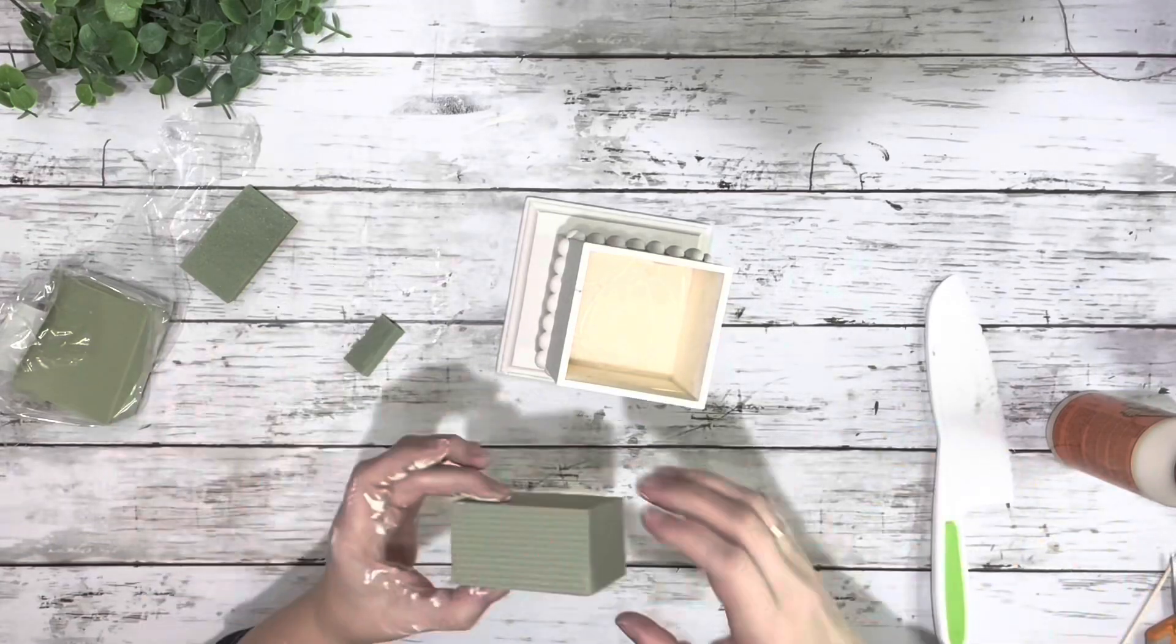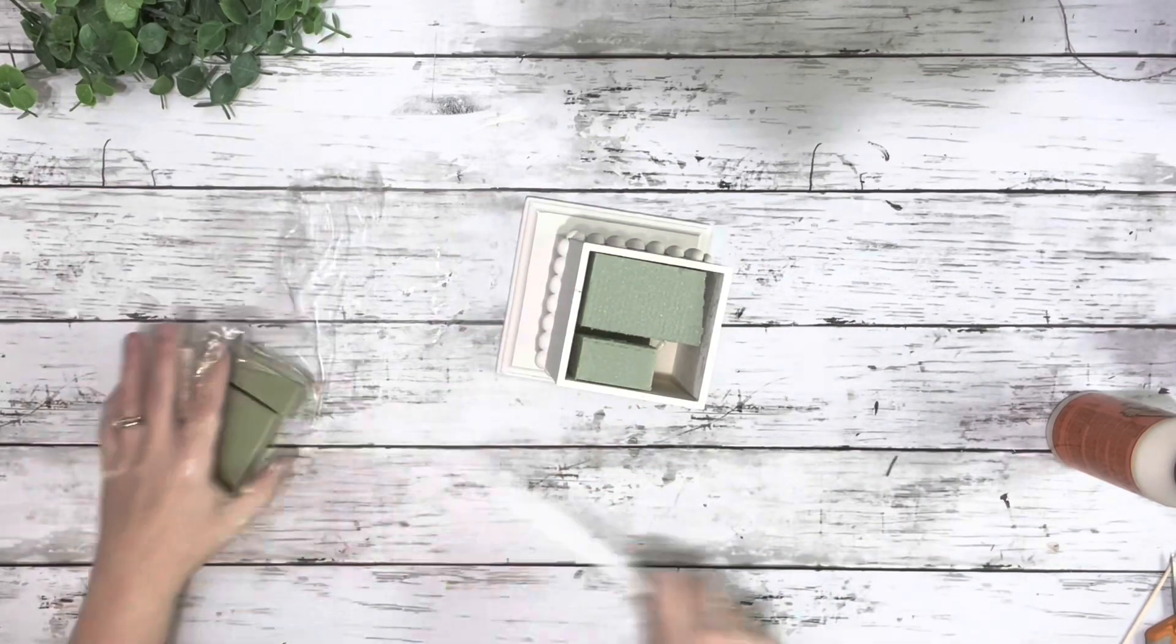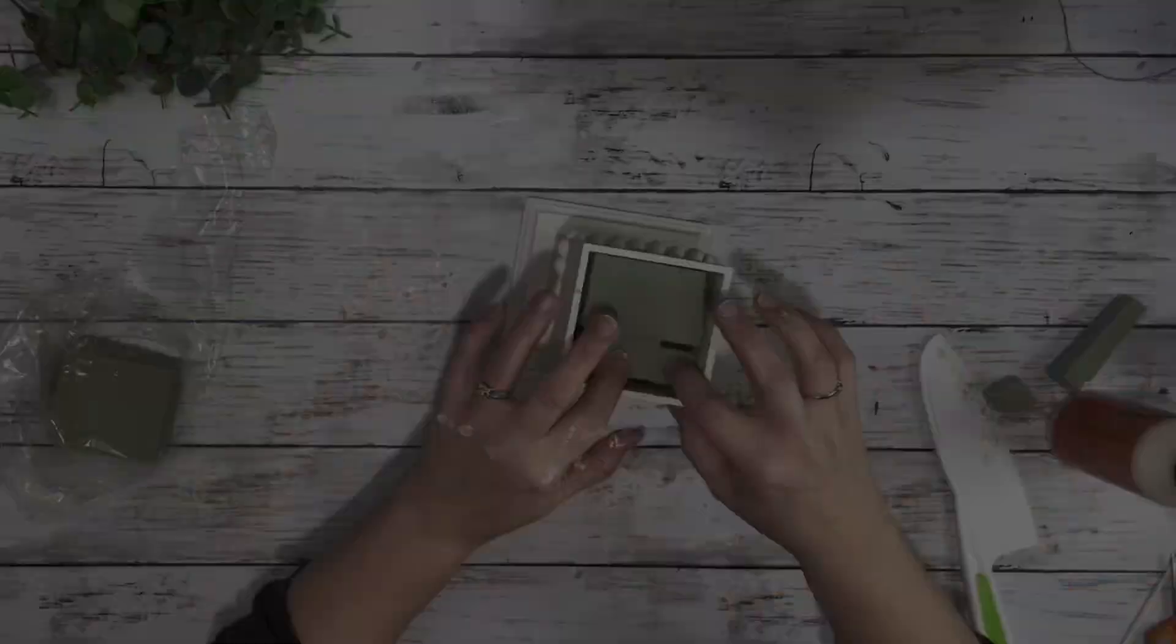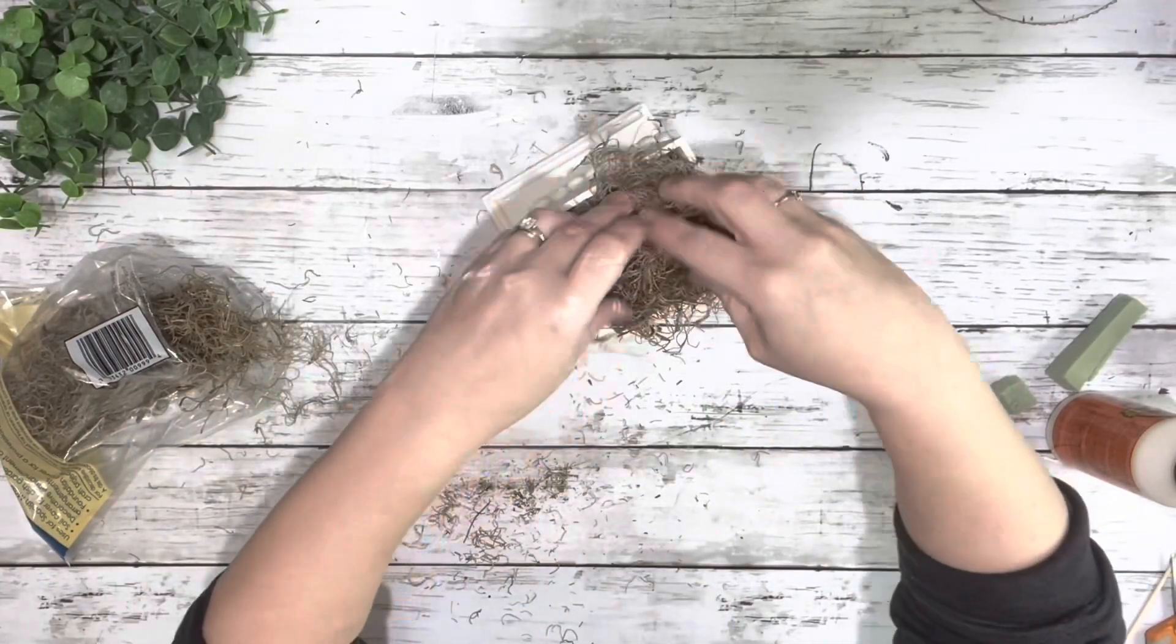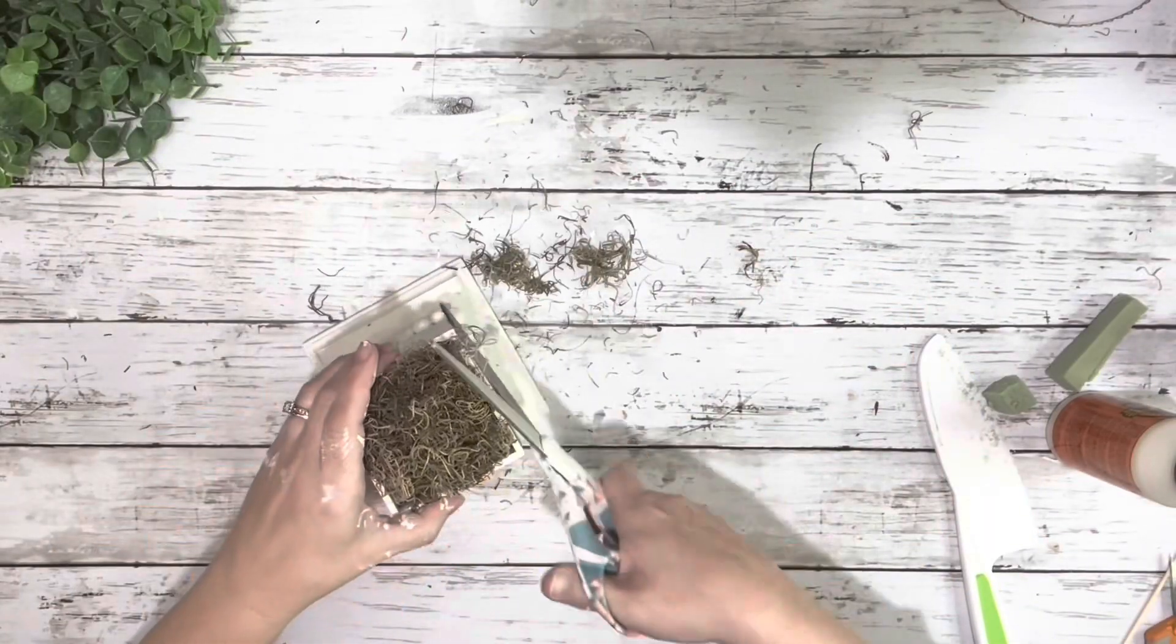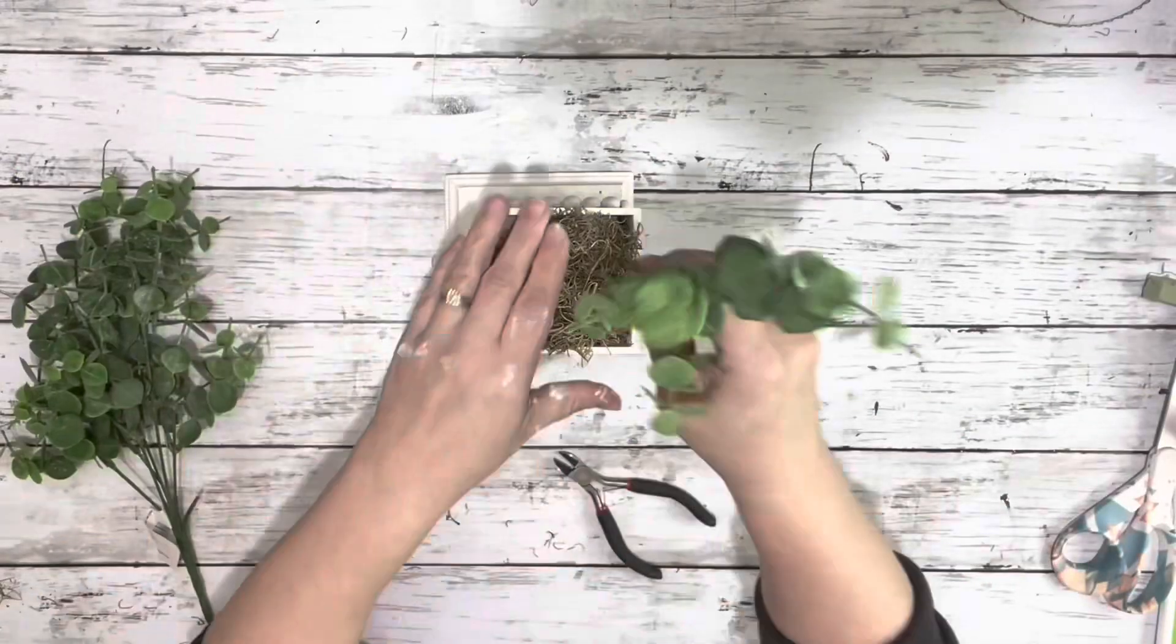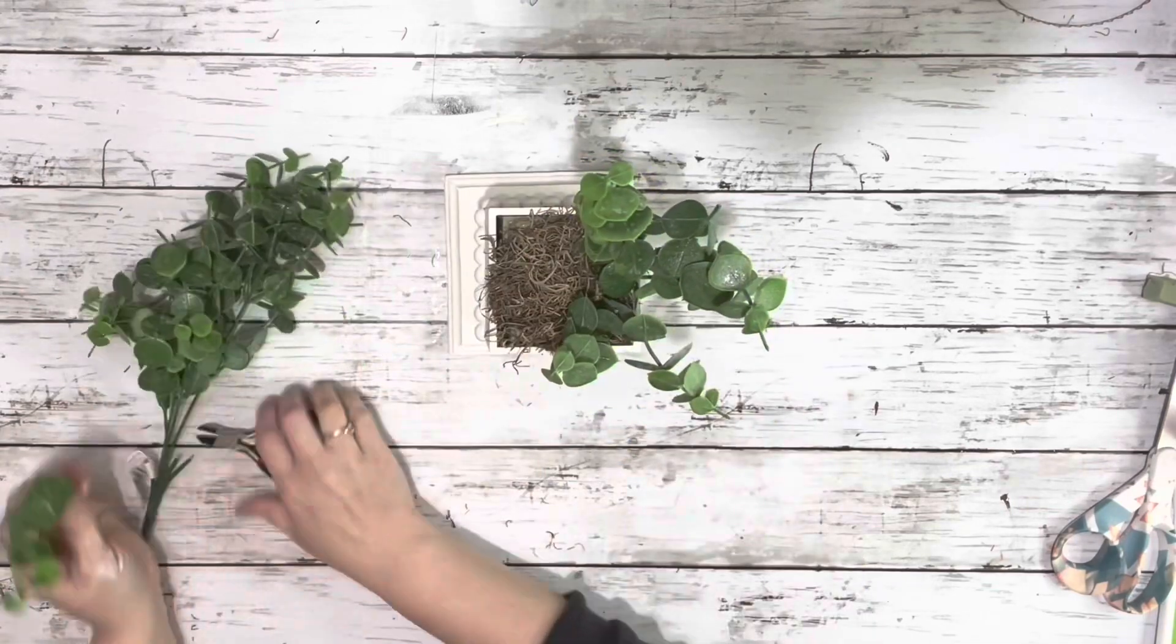And then I added in some floral foam with some hot glue. Put some Spanish moss on the top and then trimmed up the edges of that. I cut pieces from the eucalyptus pick and filled in the planter box.